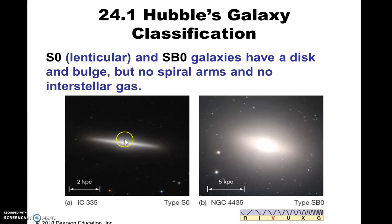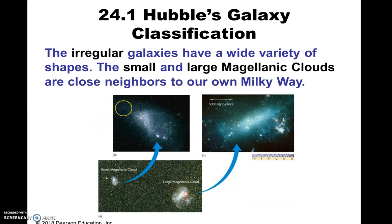Because they kind of looked like spirals, but there's no disk, there's no spiral arms, there's no bulge. They just kind of looked like some kind of transition — to Hubble's eye — between ellipticals and spiral galaxies. Again, that turns out to be wrong, but we'll see why that is later.